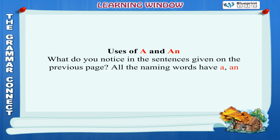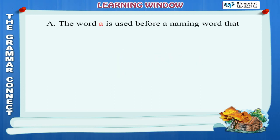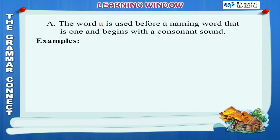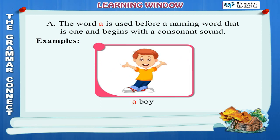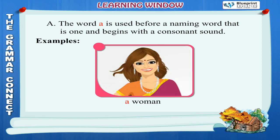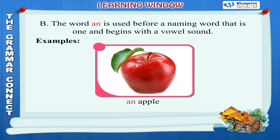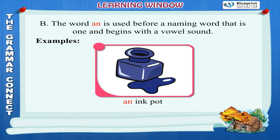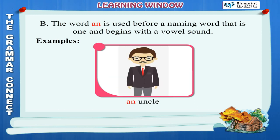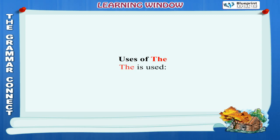All the naming words have a, an or the before them. Rule A: The word 'a' is used before a naming word that is one and begins with a consonant sound. Examples: A boy, a girl, a book, a woman. Rule B: The word 'an' is used before a naming word that is one and begins with a vowel sound.